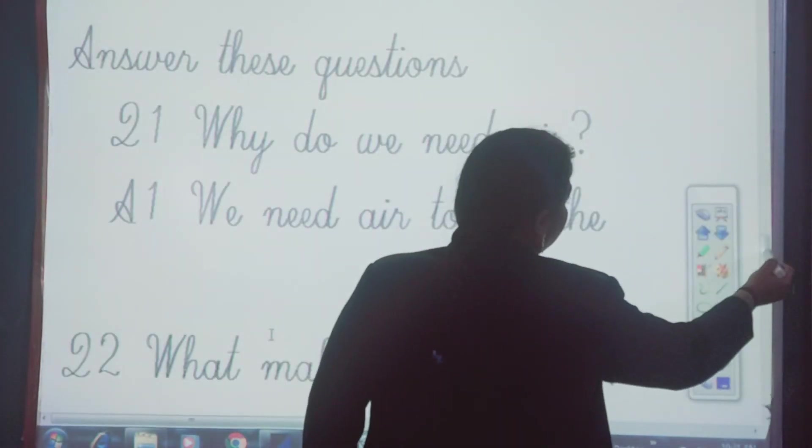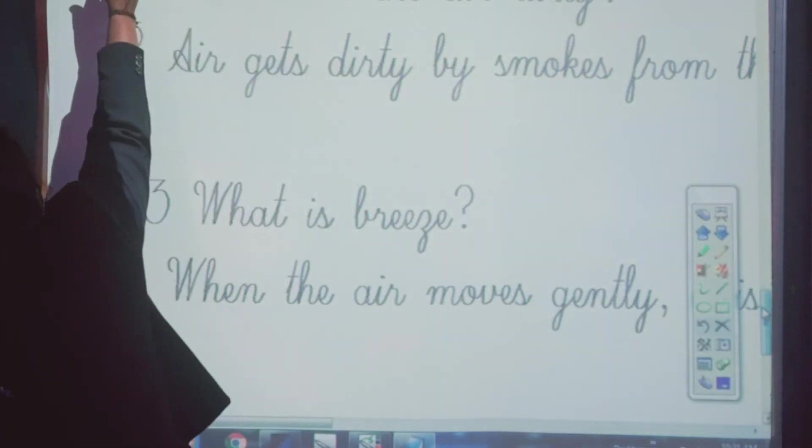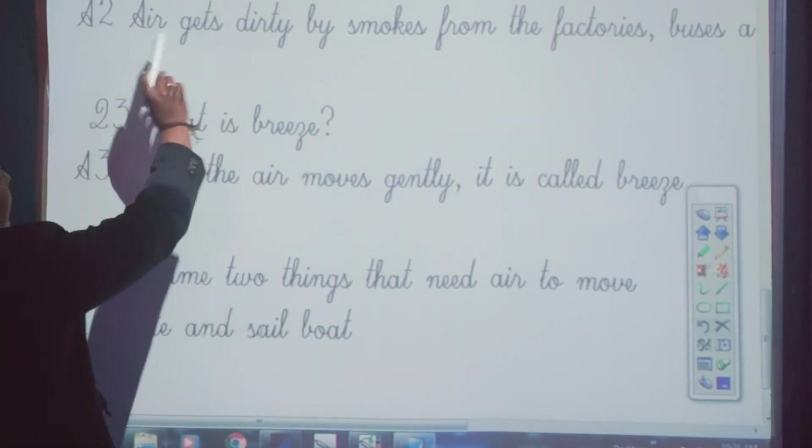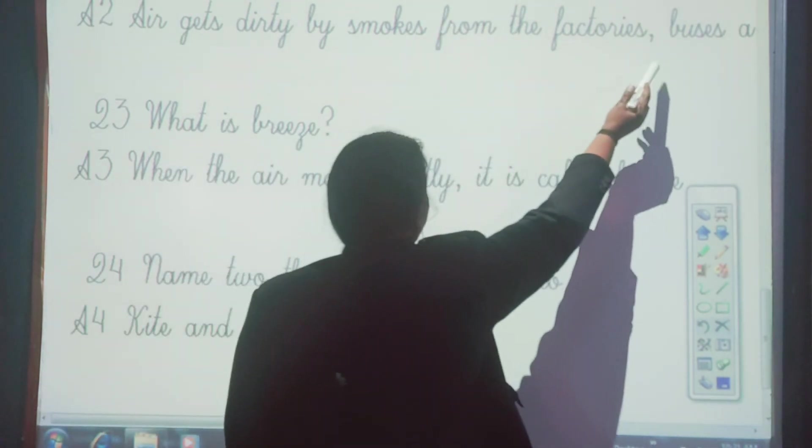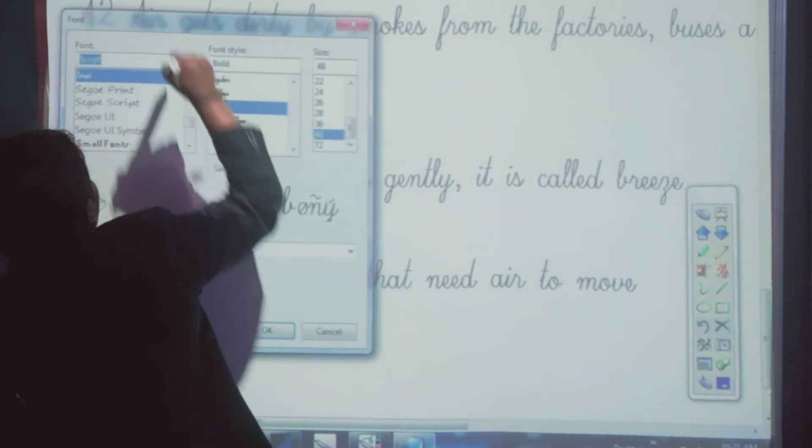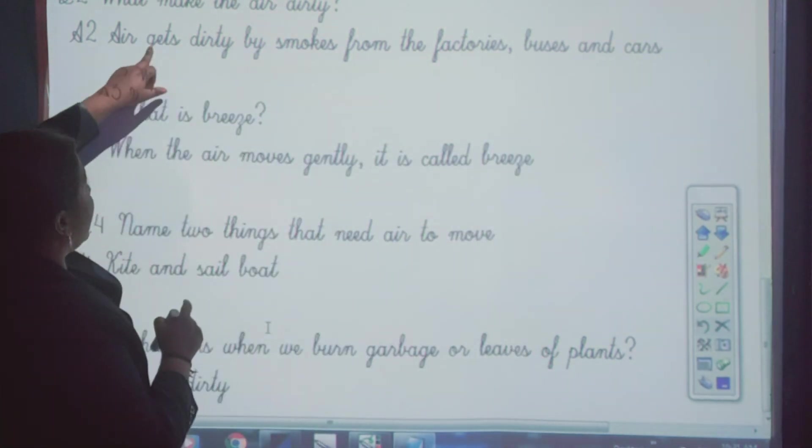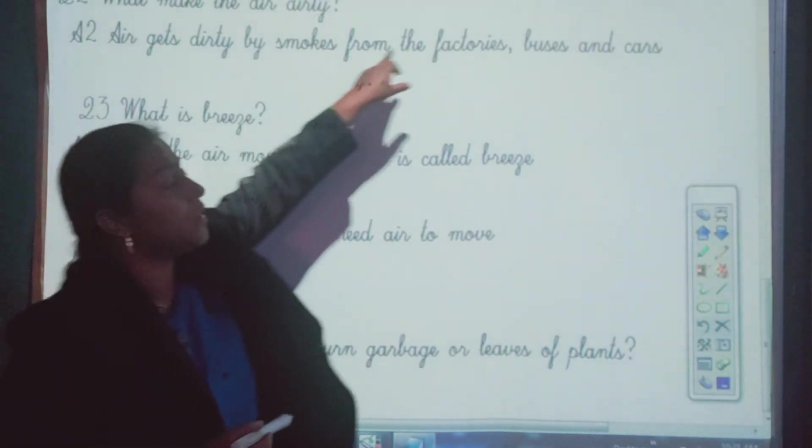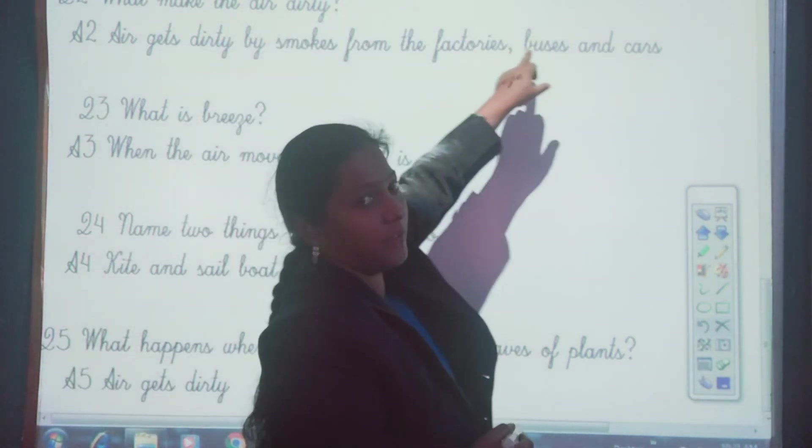Next question is, what makes the air dirty? What makes the air dirty? Air gets dirty by smokes from the factories, buses and cars. The air gets dirty. How air gets dirty? Why air gets polluted? So air gets dirty by the smokes, smokes from the factories, buses and cars. That is the answer.